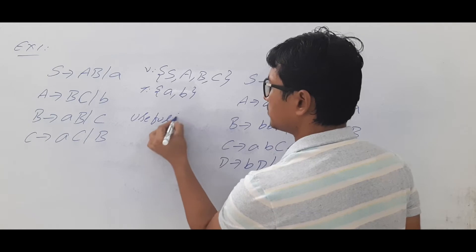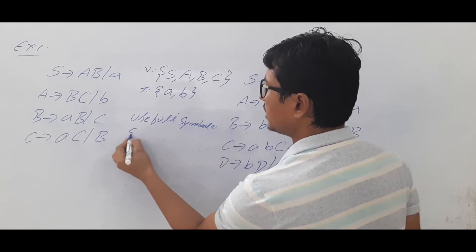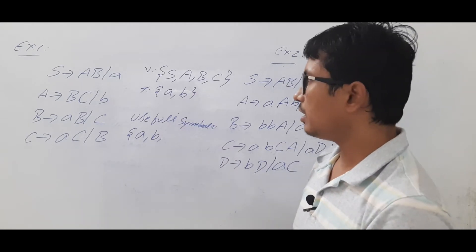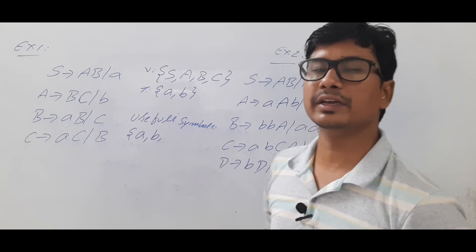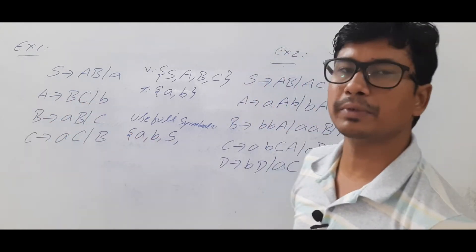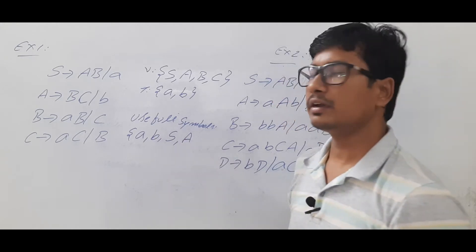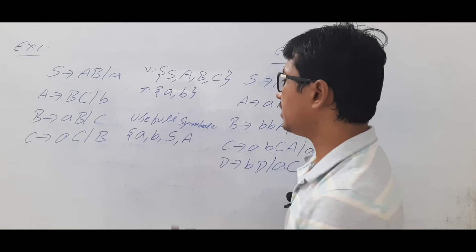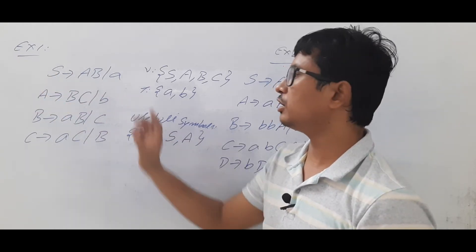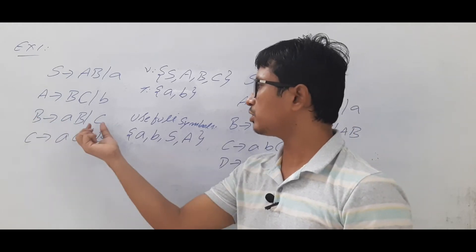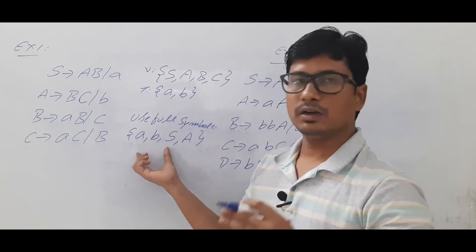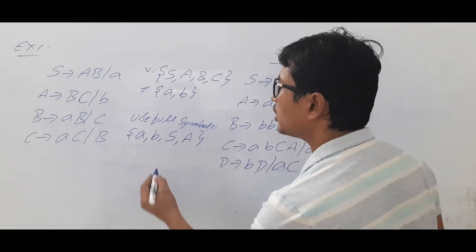The useful symbols set W_i initially consists of all terminals, since they are always useful. Now, S can directly derive a terminal, so we add S. Similarly, A can derive 'b' which is a terminal, so A is also a useful symbol because it is directly determining a terminal. B and C are not able to determine any terminal directly, so right now they will not be added to the set W_{i+1}.